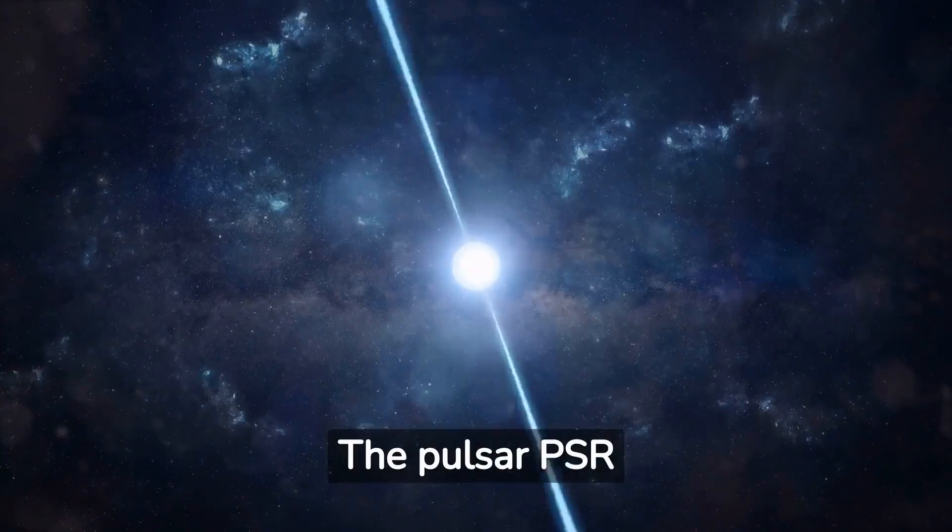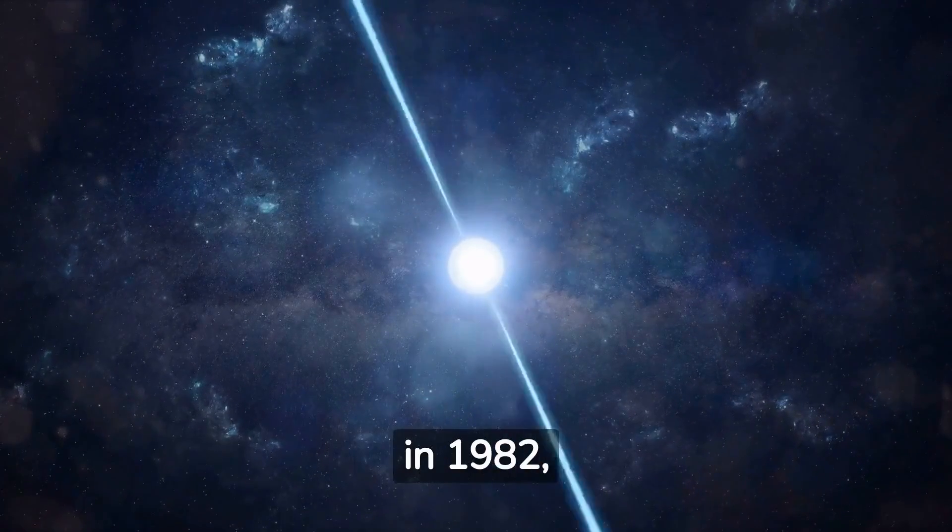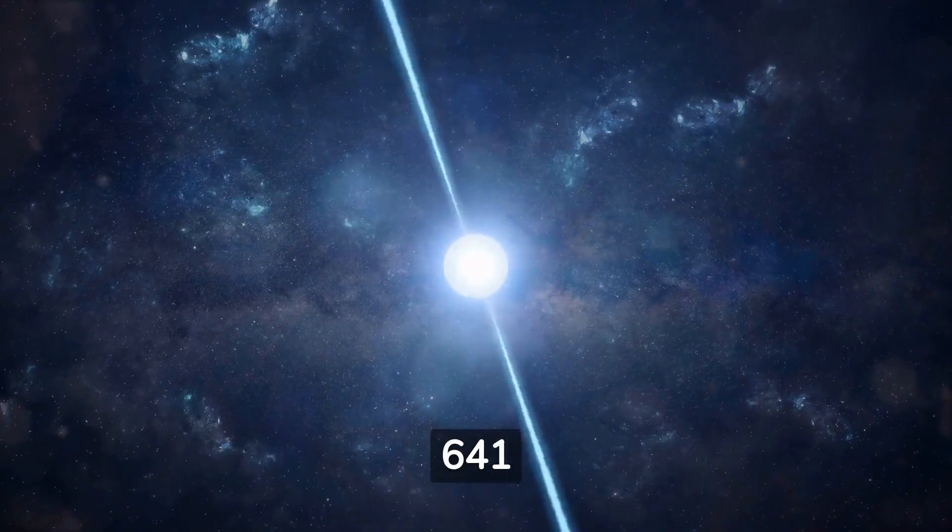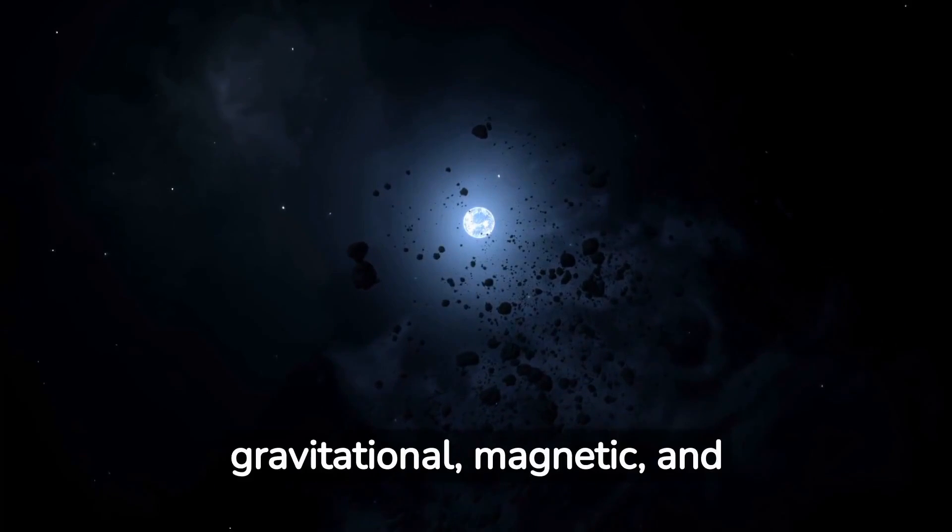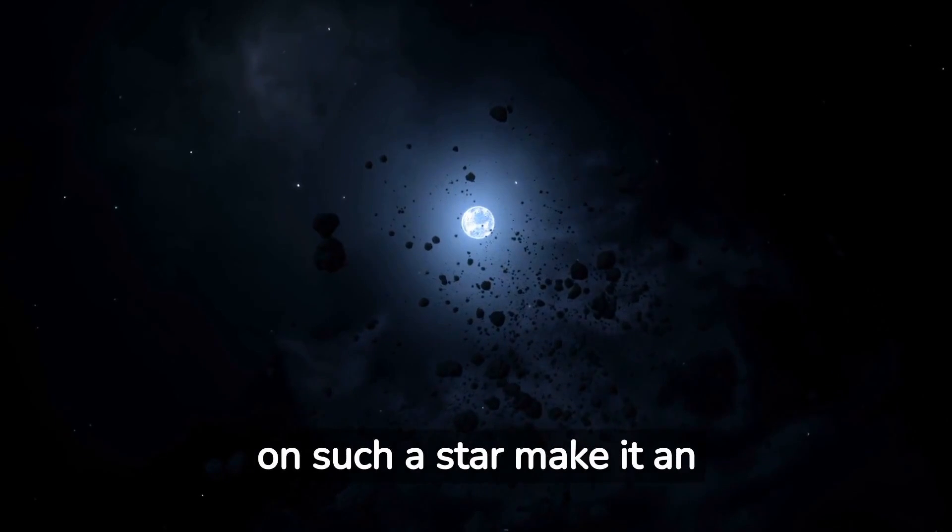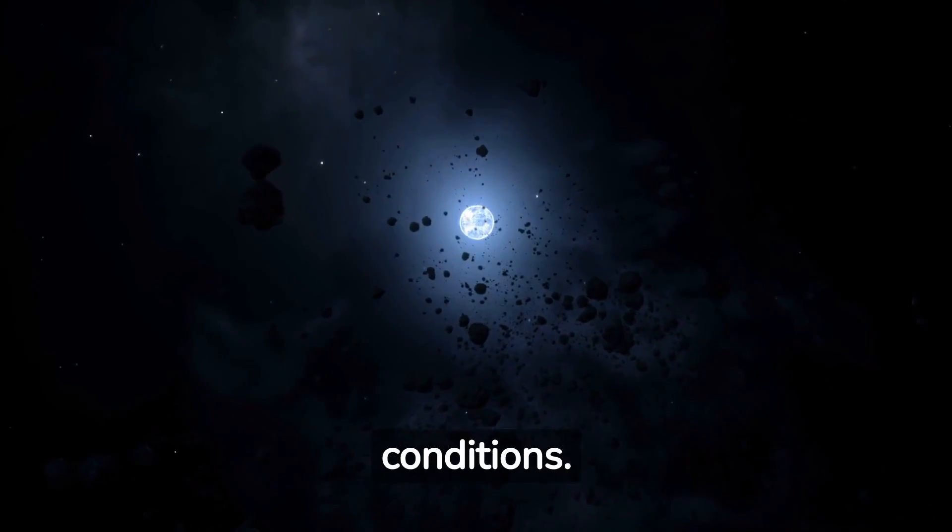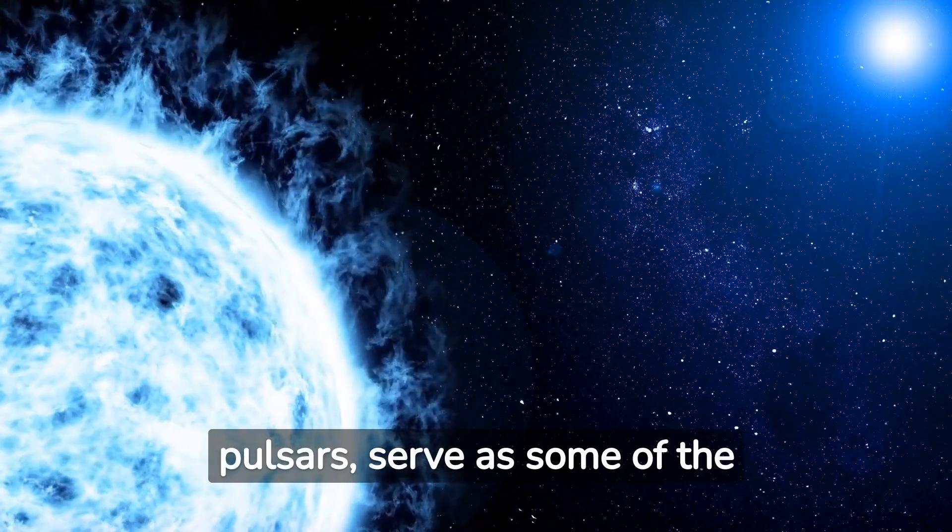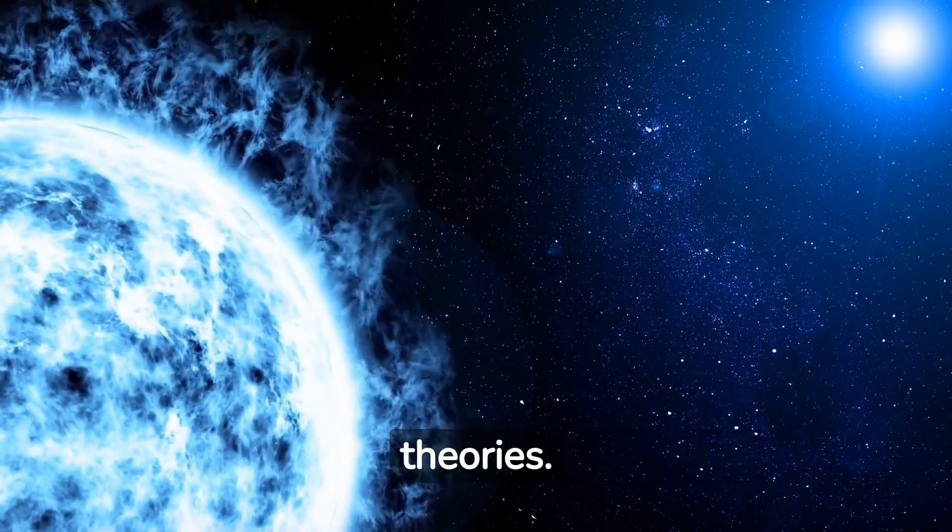The pulsar PSR-B1937-21, discovered in 1982, provided evidence that these stars could rotate at an astonishing speed, reaching up to 641 rotations per second. The significant gravitational, magnetic, and centrifugal forces that act on such a star make it an unparalleled research environment for exploring the laws of physics under extreme conditions. These fast-spinning neutron stars, known as pulsars, serve as some of the most accurate cosmic timekeepers and have played a crucial role in validating gravity theories.